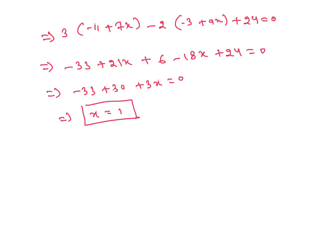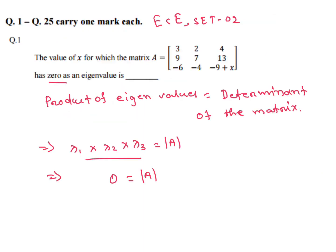This is a fill-in-the-blanks type question. With x equal to 1, the key property to remember is: product of eigenvalues equals determinant of the matrix, which lets us find the value of x.